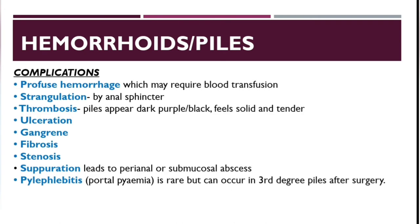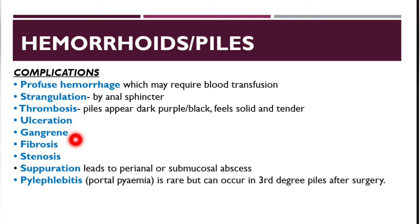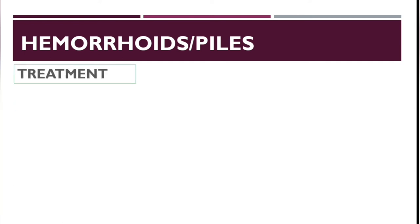Complications of hemorrhoids include profuse hemorrhage possibly requiring blood transfusion, strangulation by the anal sphincter, and thrombosis — thrombosed piles appear dark purple or black, feel solid and tender. Other complications include ulceration, gangrene, fibrosis, stenosis, suppuration (which can lead to perianal or submucosal abscess), and pylephlebitis (portal pyemia), which is very rare and usually occurs in third-degree hemorrhoids after surgery.